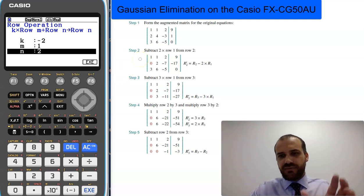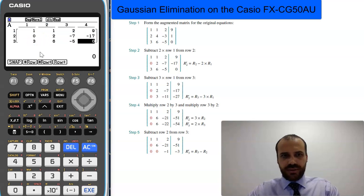A little bit confusing there, but we're adding negative 2 times row 1 to row 2. We'll get exactly what's there.